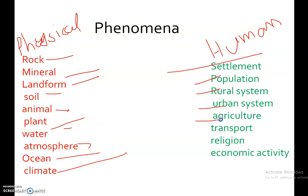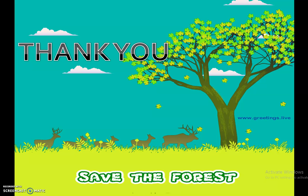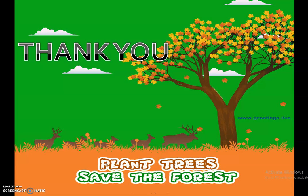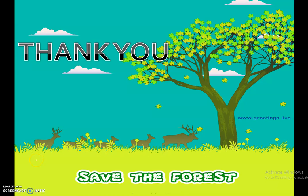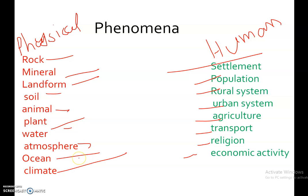Human phenomena include settlement, population, rural system, urban system, agriculture, transport, religions, and economic activity. I hope you understood the differences between Human Geography and Physical Geography. In the next lecture we will learn about Systematic Geography versus Regional Geography. Thank you.